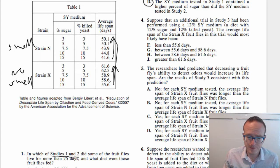Suppose that an additional trial in study three, this one, had been performed using a 12% SY medium, a diet with 12% sugar, 12% killed yeast. The average lifespan of the strain X fruit flies. Okay, so we got 12% at strain X, so we should be looking at strain X here. And notice that there's not a 12% on the graph, so they're asking us to do interpolation. In other words, to kind of insert a value between two values. So if I could interpolate a 12%, it would be like right somewhere in here between this 10, this 15.